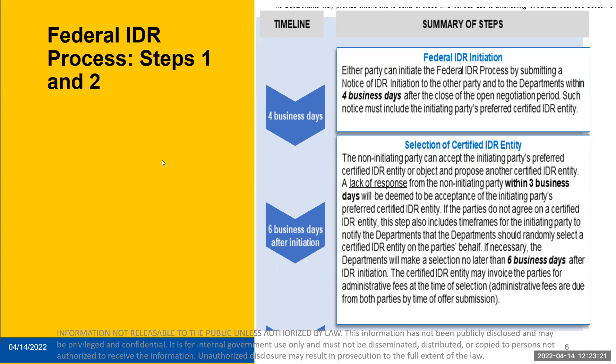Some states allow self-funded plans to opt into their state process, but it is not required. Therefore, the federal process will be available to all self-insured plans who have not opted into their state's process. Similarly, the federal process will be available in all states for FEHB carriers who do not have a contract with the Office of Personnel Management that directs the carrier to use the state process. The first question on this step: if the eligibility is in dispute, how would that be handled, and is there a way to dispute eligibility prior to the IDRE being assigned and fees incurred?